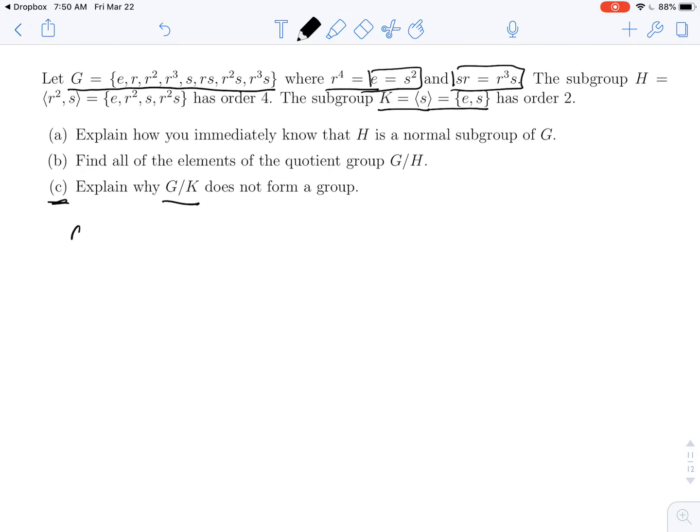So we know that G mod K is a group if and only if K is a normal subgroup of G. So what we need to do if we want to show that G mod K is not a group, then we need to show that K is not a normal subgroup of G.